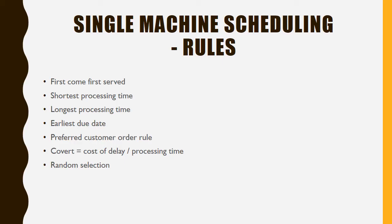The fifth rule is Preferred Customer Order. Some customers are loyal, giving orders regularly, so the company gives their jobs priority to keep them satisfied. Beyond loyalty, there may be other criteria by which the company decides which customer's order is processed first.